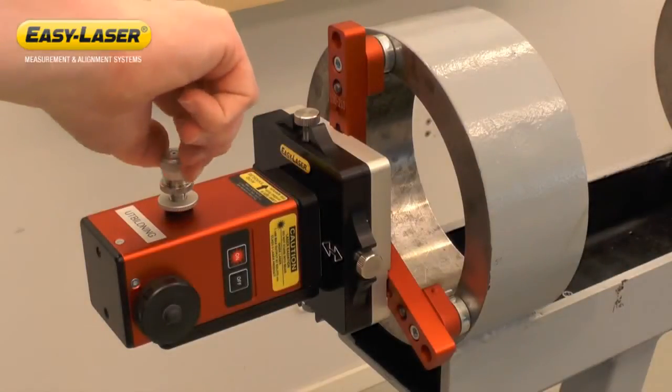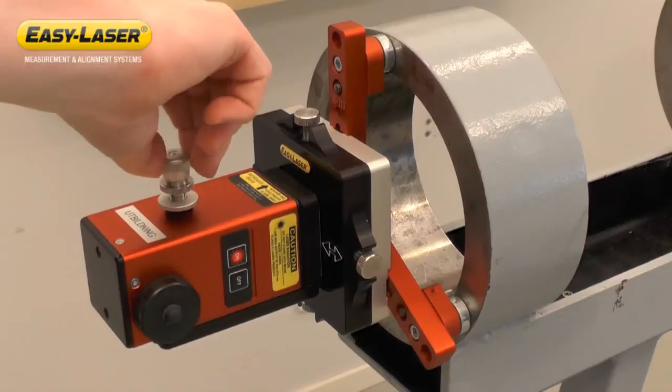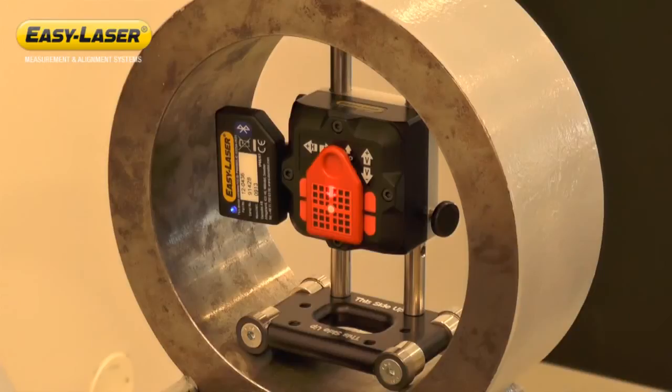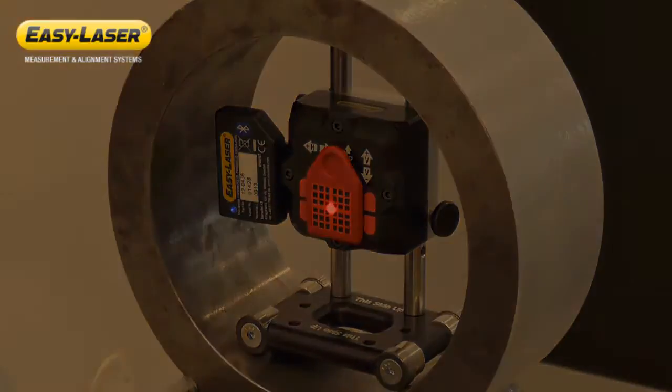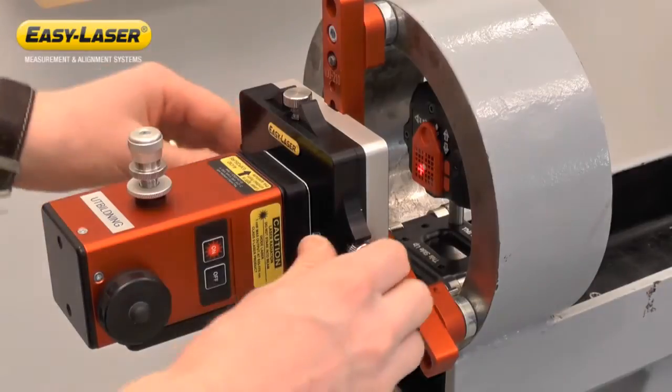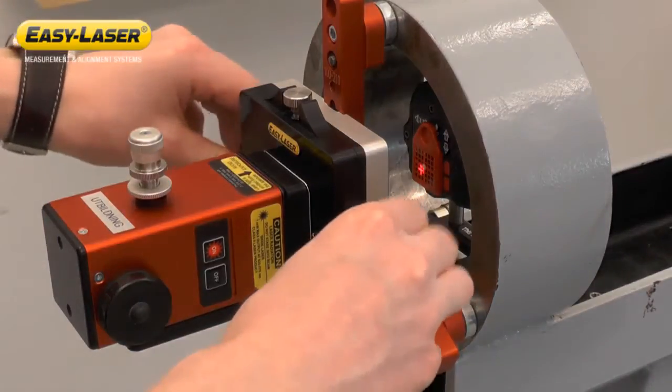First I have to align the laser beam along the measurement. I do this through adjustment of the tilt table while looking at the target on the detector placed in the bearing journal the farthest away. Then using the offset screws we adjust the offset of the laser transmitter close to the laser.